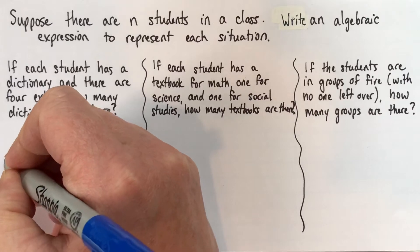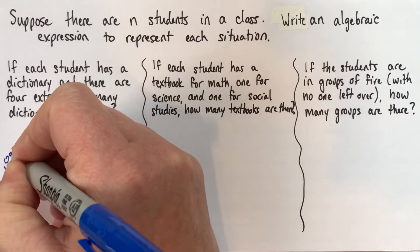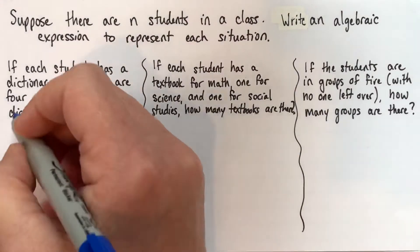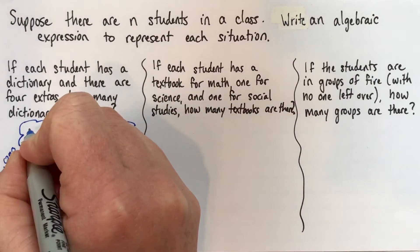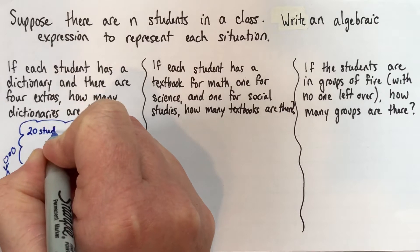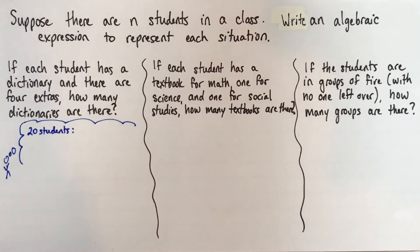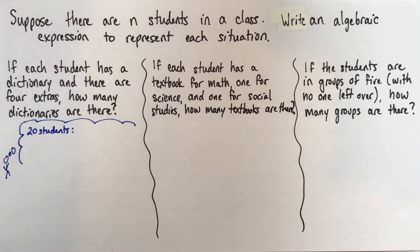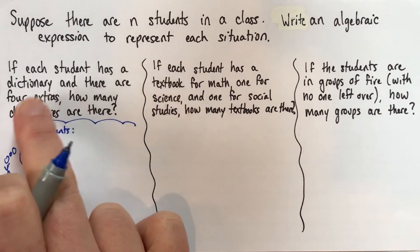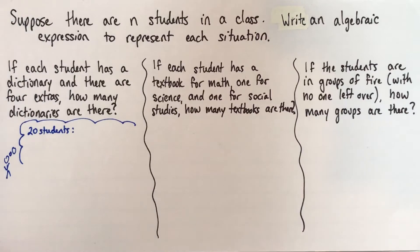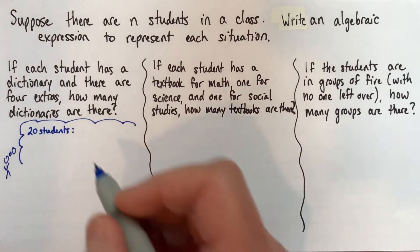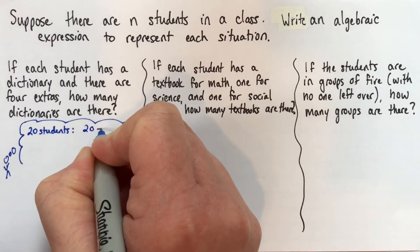I'm going to draw a little stick person here and put the following thoughts in a thought bubble, because these aren't going to be our answer — they're going to help us get to our answer. Suppose there were 20 students. We don't know that there are 20 students, but thinking about numbers helps you think about algebra because it works the same. If there were 20 students and each had a dictionary and there were four extras, how many would there be? Well, 20 plus 4.